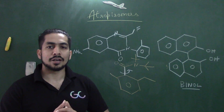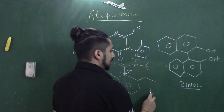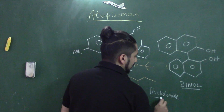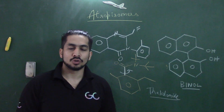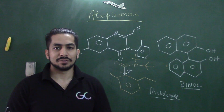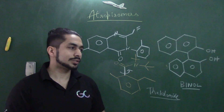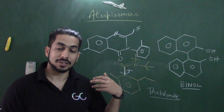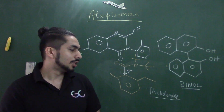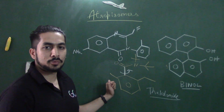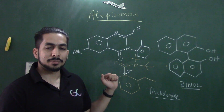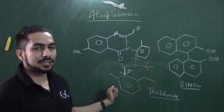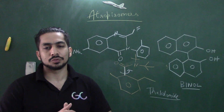Most of you might have heard about the thalidomide tragedy. What happened there was that just the change in enantiomer led to various birth defects in children. The drug was given to pregnant women, and they thought the R and S enantiomers would not differ much in effect. But one enantiomer was helpful in treating the disease while the other caused serious developmental defects in children. That is why researchers have started paying attention to atropisomers — their stereochemical aspects are critically important.